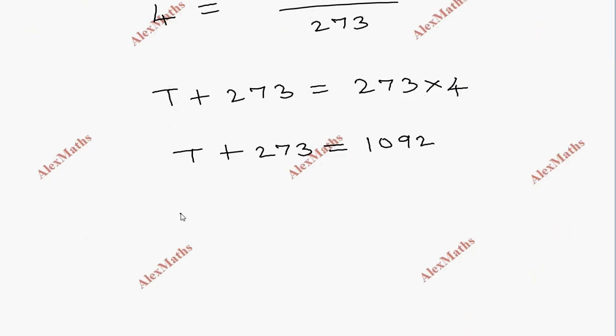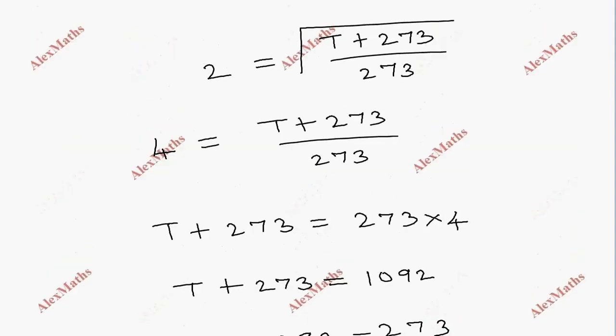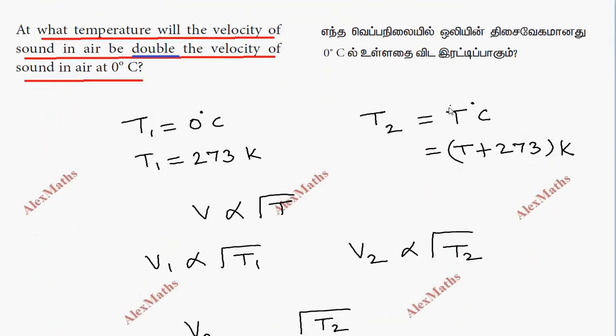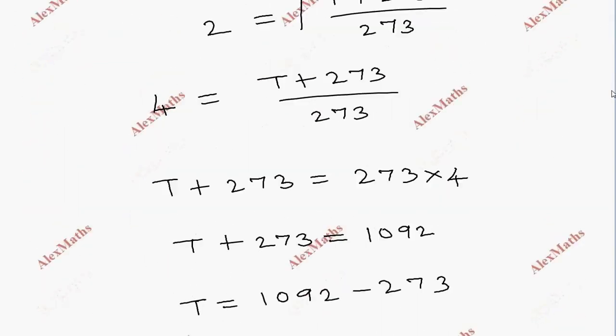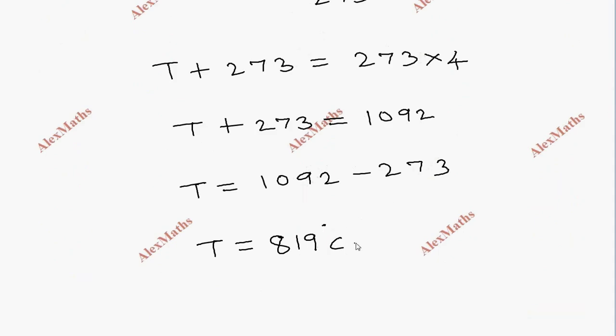So T equals 1092 minus 273. T equals 819. The answer is 819 degrees Celsius.